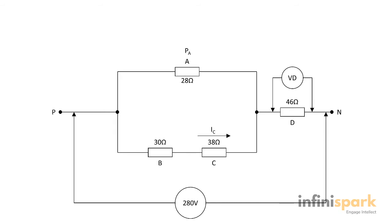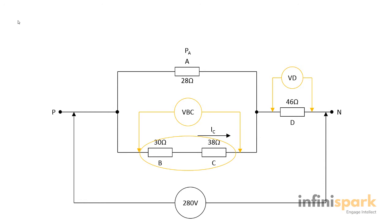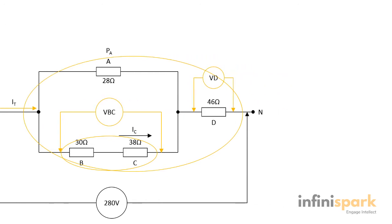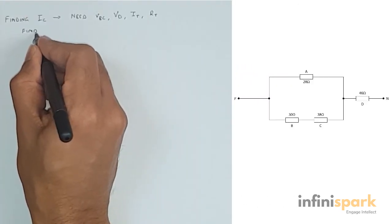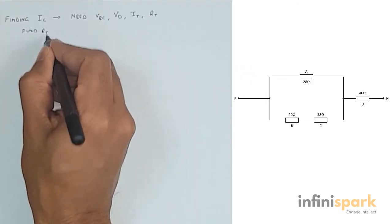To find IC we first need to find voltage across B and C — let's call it VBC — and resistance of B and C. To find VBC we need to find voltage across D (VD). To find VD we need to find the total current IT, and to find IT we need to find the total resistance RT. So we need to start by finding RT.